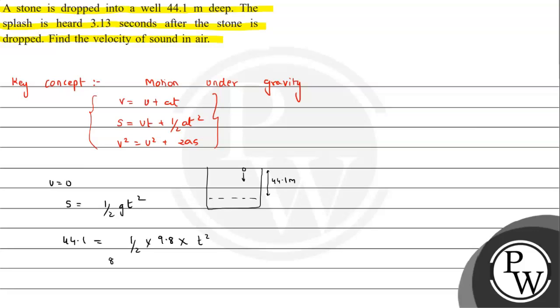So t value is 88.2 divided by 9.8, root. This will give us the value of t—9 root will be 3—so 3 seconds. It will take 3 seconds to reach the water surface.